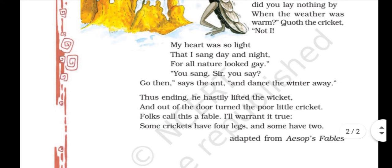'Thus ending, he hastily lifted the wicket and out of the door turned the poor little cricket. Folks call this a fable — I'll warrant it true. Some crickets have four legs and some have two.' So lastly, when the ant completely refused to give him any help — because of his own foolishness, because he had done nothing for himself, so why would someone else do something for him — he left disappointed. Now, folks say that this is a fable, but the poet is trying to say that for me, I think this is true — because some crickets have four legs, and some have two.